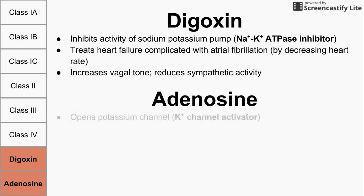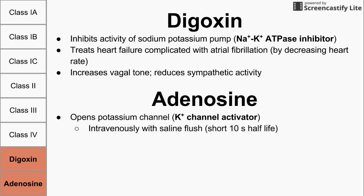The last drug is adenosine, which is a rapid opener of the potassium channel. Adenosine is unique because it has a very short half-life. When injected into a vein, it must be followed with a bolus of saline to push it into the heart where it has its main antiarrhythmic effect. This must be done quickly because adenosine is degraded very rapidly in the body.